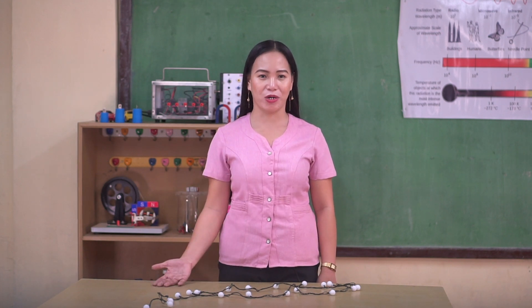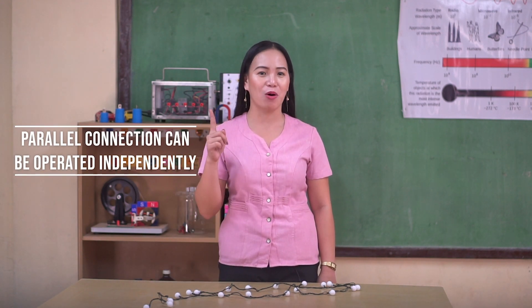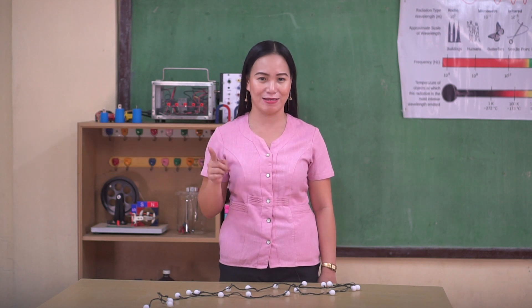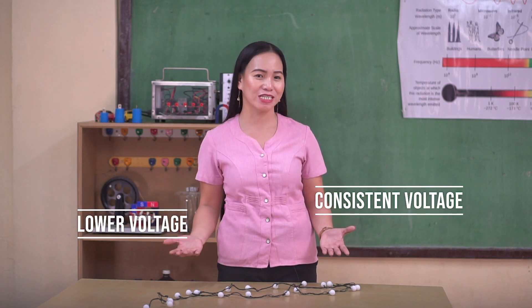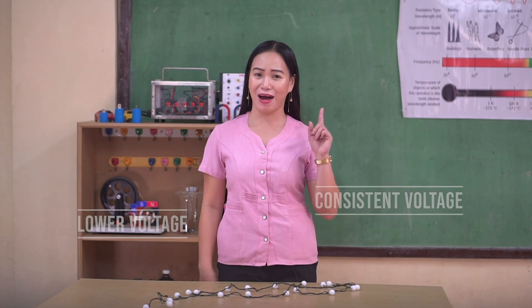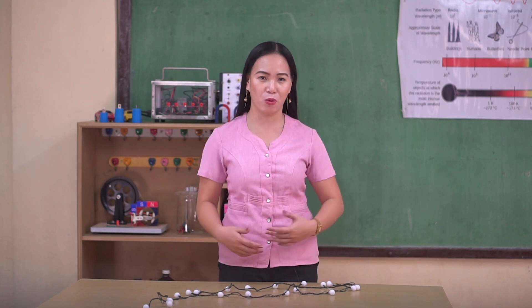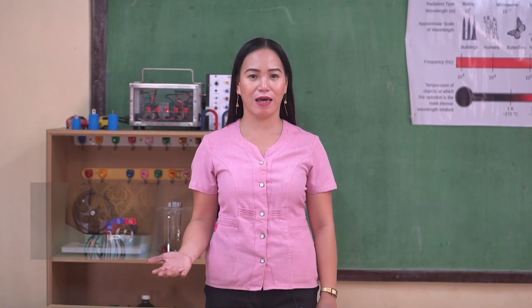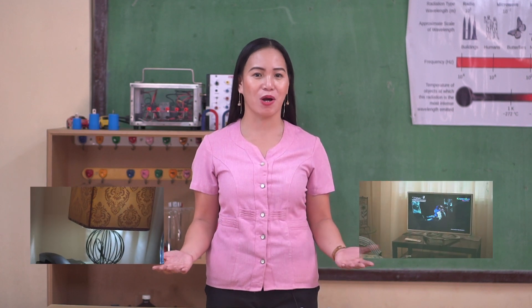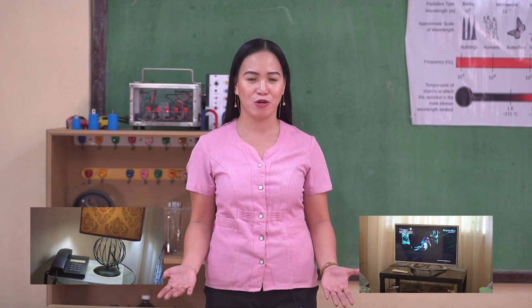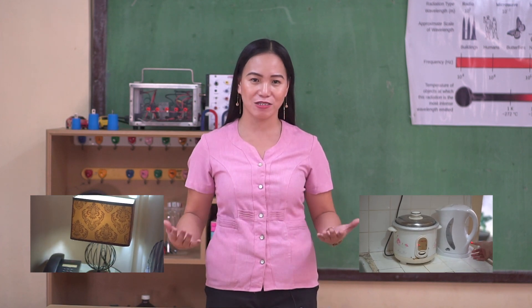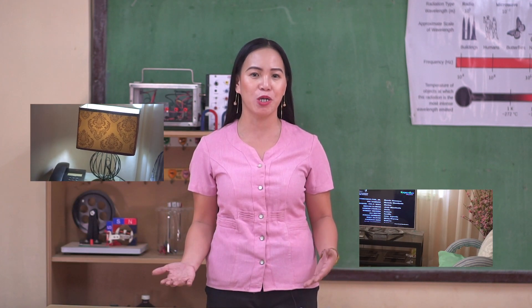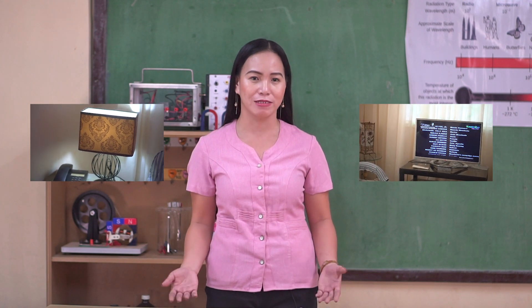In a parallel connection, it is an advantage that it can be operated independently. There is consistent voltage and usually lower voltage for safety. But it requires the use of more wires. Various lamps and electrical appliances in our homes are connected in parallel, so that each of the lamps, bulbs, and appliances can be operated independently. For us to have control over the individual lamps or loads, they have to be wired in parallel.